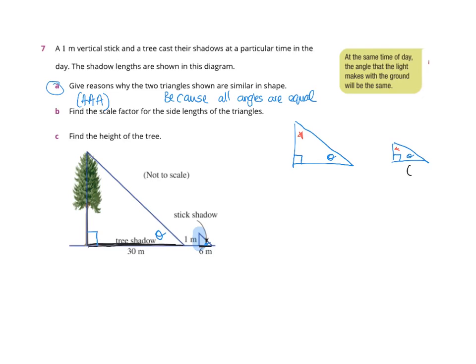So if you've got this one's 6 metres and this is 30 metres, you've got to use the same side. See how I've used the shadow side? The way you find the scale factor is you put 30 over 6.